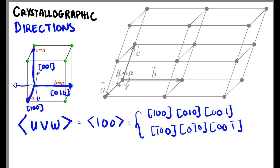Do take note that the family of directions does not apply to all kinds of crystal systems. Just because [1 0 0], [0 1 0], and [0 0 1] are crystallographically equivalent in the cubic system does not mean they will be the same in, say, a triclinic system. Looking at the triclinic system, the lengths of A, B, and C are not the same, so the directions are not crystallographically equivalent, and that family is not valid for that crystal system.